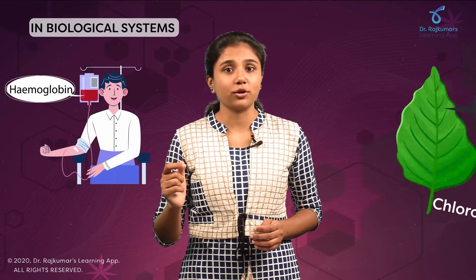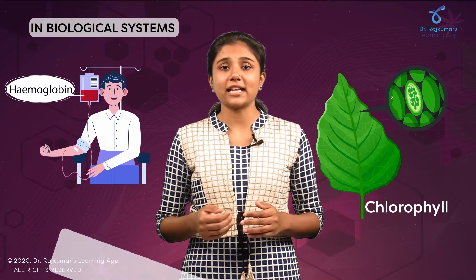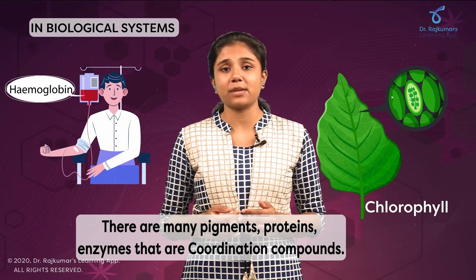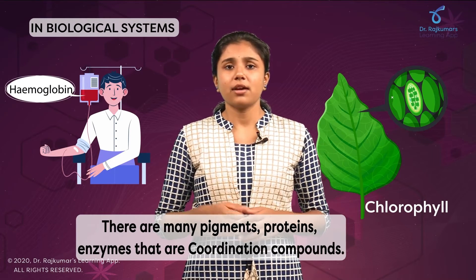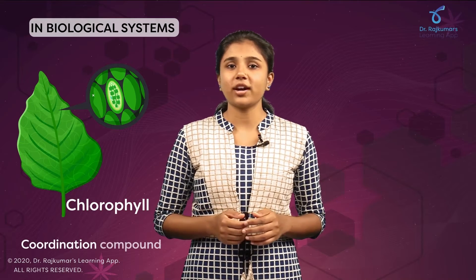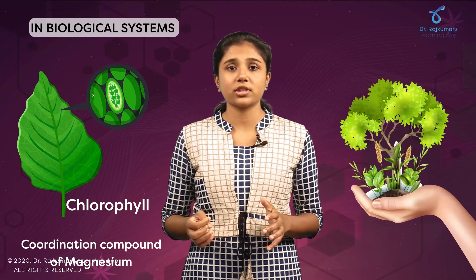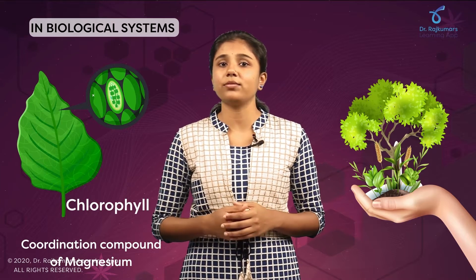Coordination compounds in biological systems — while discussing colors in coordination compounds, you must have come across hemoglobin and chlorophyll being coordination compounds. There are also some pigments, proteins, and enzymes that are coordination compounds. The pigment responsible for photosynthesis is chlorophyll, a coordination compound with magnesium metal, and we already know how essential photosynthesis is for the survival of all living beings on Earth.